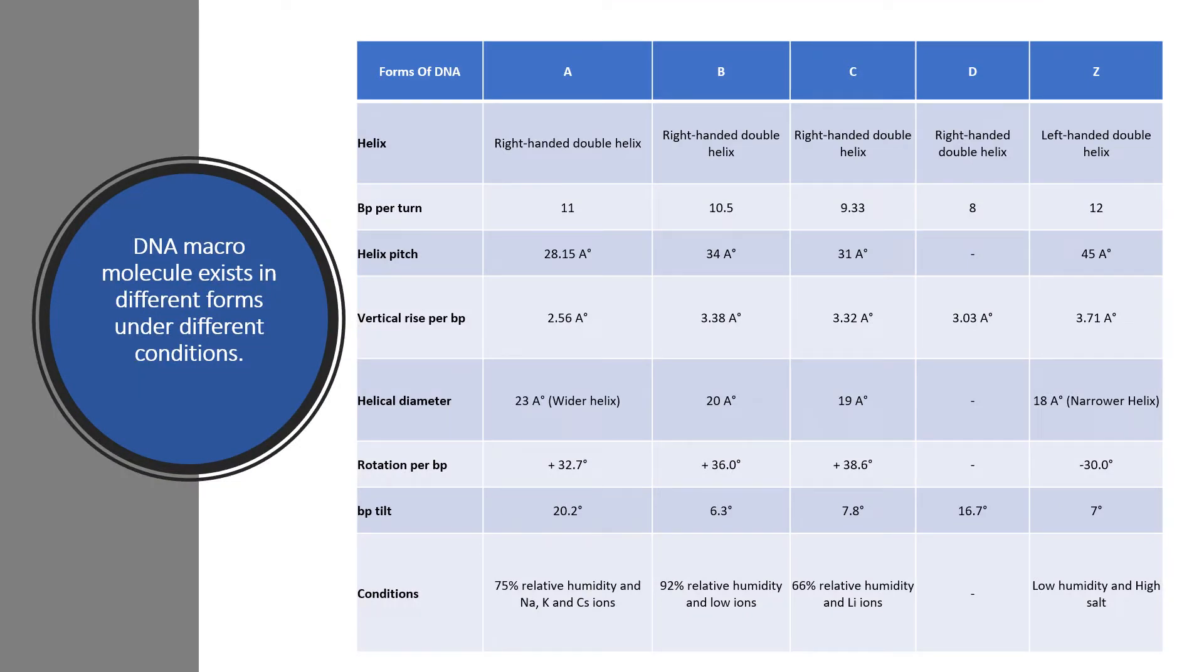DNA exists in five different forms under different conditions: A, B, C, D and Z form. Under different conditions means at 75% relative humidity and in the presence of sodium, potassium and cesium ions, A form exists.